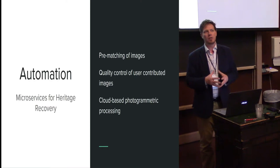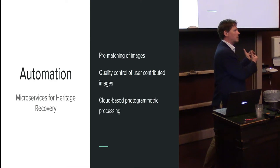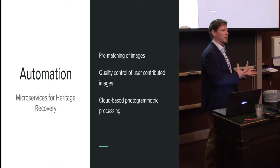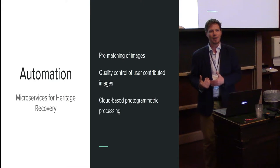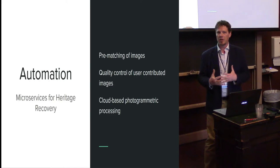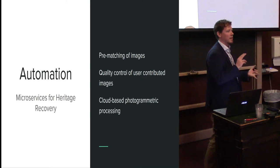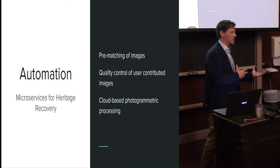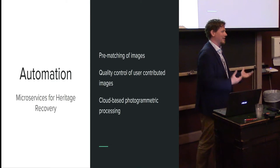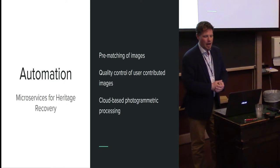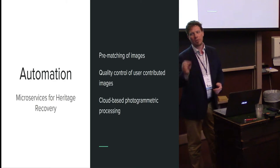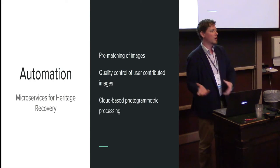We're also looking at pre-matching images to sort those more likely to be associated together toward the top of the page, but this requires computer vision that is process-intensive and our project runs on our free time and our own bank accounts. We want to generate a quality rating for images — a five-star system based on EXIF data, megapixels, sensor type — versus someone who takes a screen capture and uploads it thinking it will work for photogrammetry. We'd also like cloud-based photogrammetric processing where people don't have to download images but can simply push a button to process a reconstruction group.